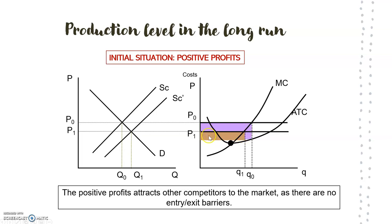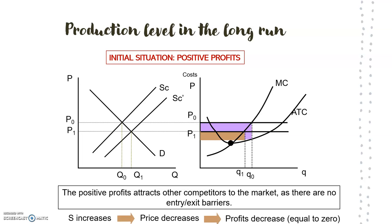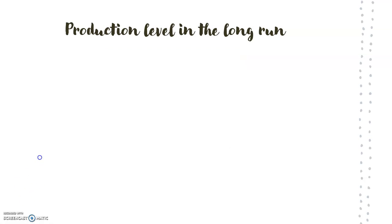Again, as we still have positive profits, more and more competitors will enter the market attracted by those profits, until the point where there are no more profits. As supply increases, the price decreases and the profits decrease until they are equal to zero. When profits are equal to zero, we will be in long-run equilibrium.